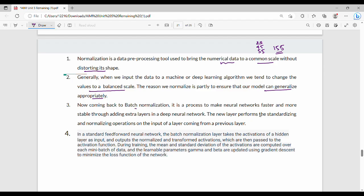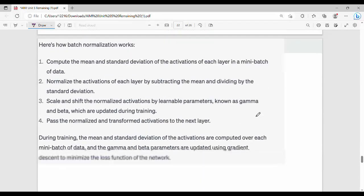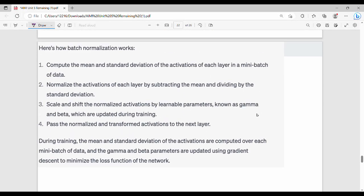Batch normalization is a process to make neural networks faster and more stable. When values are very small, the computation is faster. By adding extra layers, the normalization layer performs the standardizing and normalizing operations on the input from the previous layer. There are 4 steps.